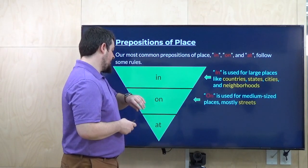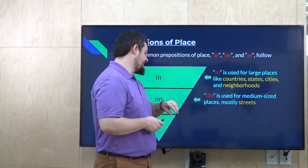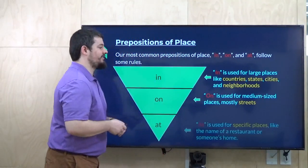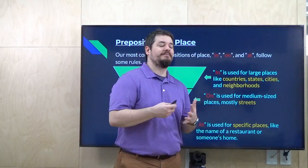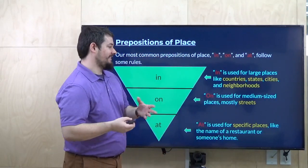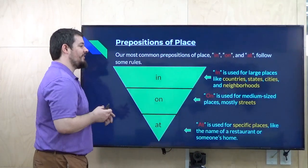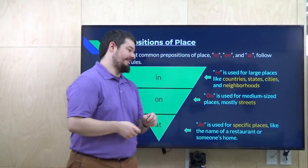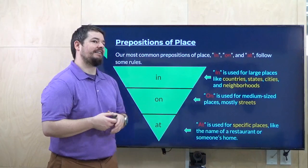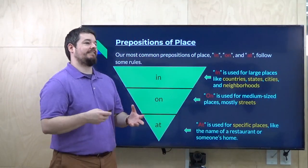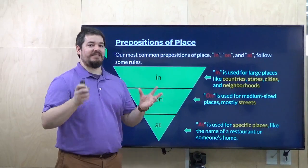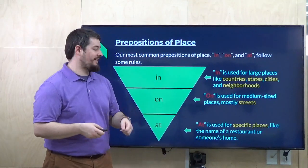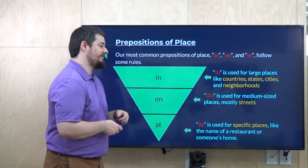'On' is used for medium-sized places, but most of the time it's streets. So you would say, on Bokyeongdong, on Dongdongdong — something like this. On Maple Street. Almost always for streets. And 'at' is used for very specific places, like the name of a restaurant. Last week I ate at Kimbapjonggook — the restaurant name, so I use 'at.' Or someone's house: I met my friend at my home.